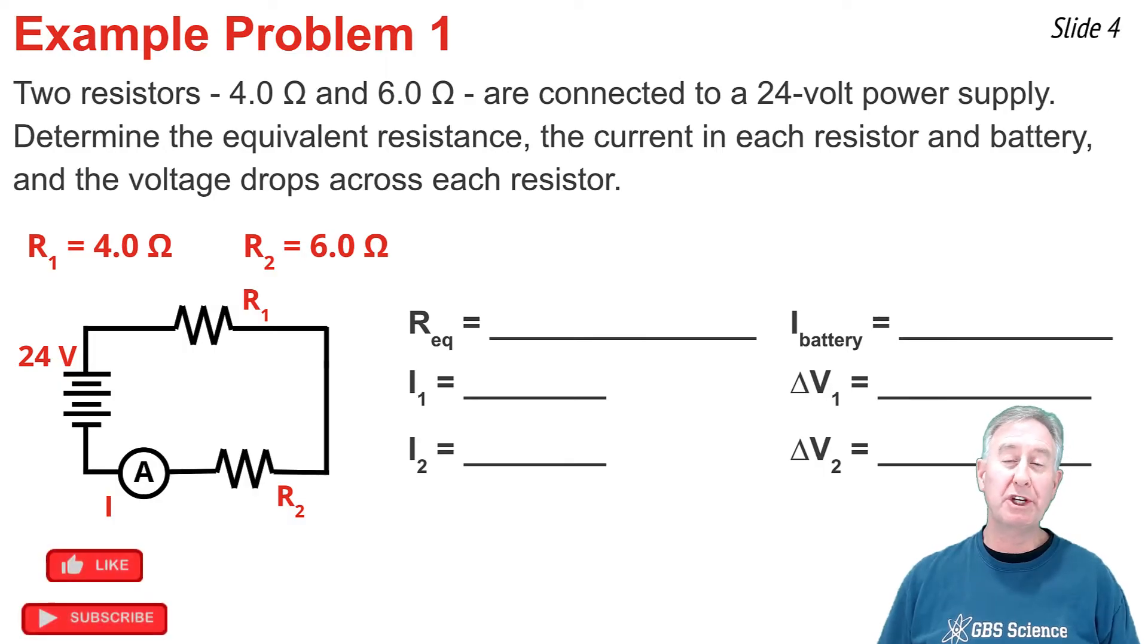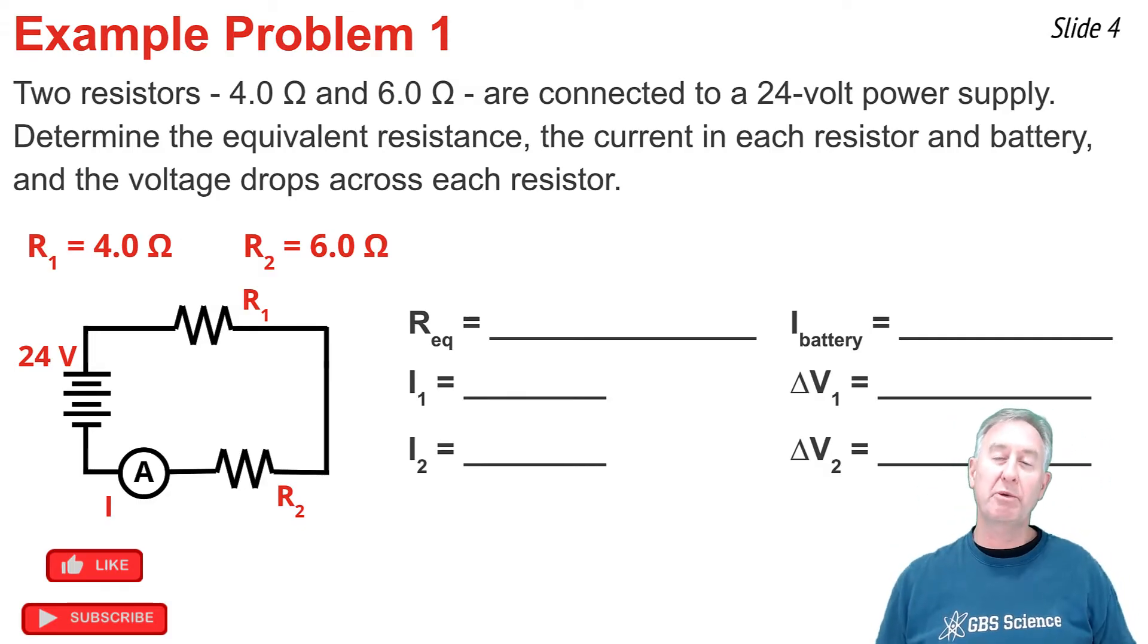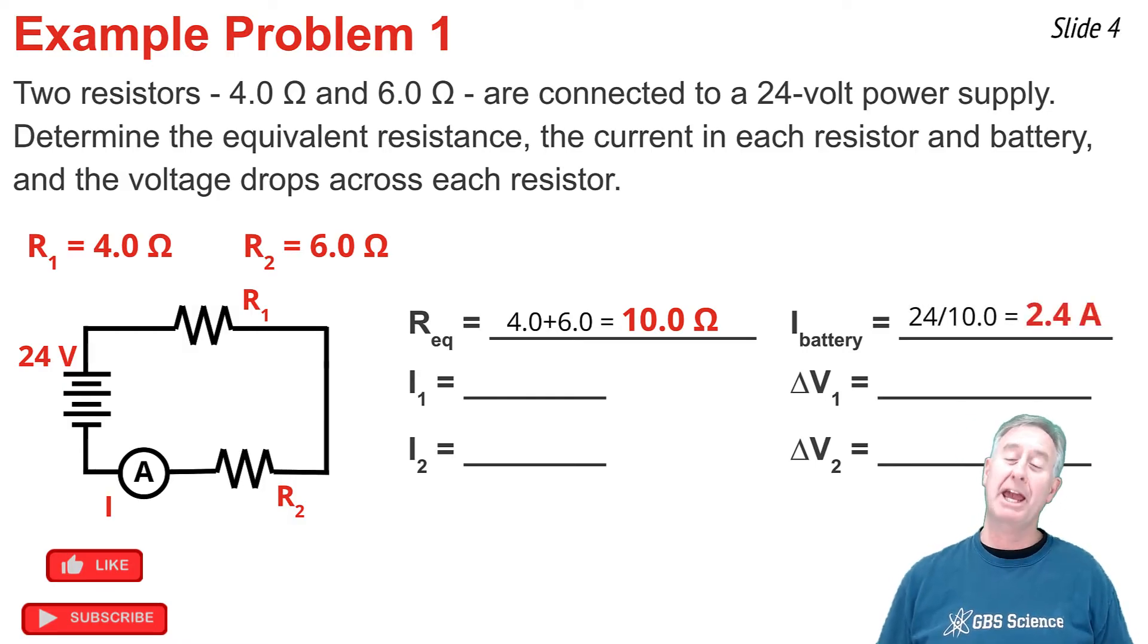In example problem one, I'm going to use these relationships to analyze a two-resistor series circuit. The resistor values are 4 ohms and 6 ohms, and the battery voltage is 24 volts. I want to determine the above. I'm going to begin with the equivalent resistance. That's simply the sum of the individual resistance values, 4 plus 6, that comes out to 10 ohms. The current in the battery is the battery voltage divided by this equivalent resistance, so that's 24 volts divided by 10 ohms, and that's 2.4 amps.